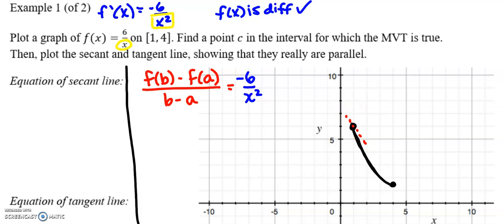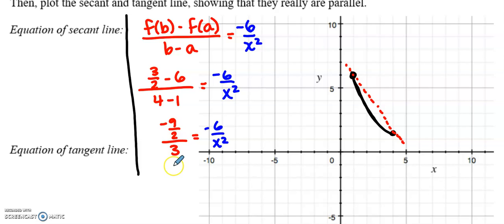Well, you can do that by a graph, or we can do that, you know, a more precise approach. f(b) minus f(a). f(b) was 1.5 minus f(a) was 6 over 4 minus 1 equals negative 6 over x squared. So then 3 halves minus 6. 6, we're going to make that into 12 halves. This is going to be negative 9 halves over 3 equals the instantaneous rate of change.